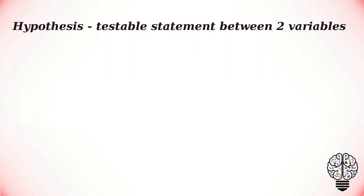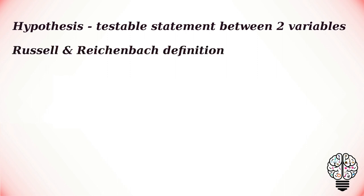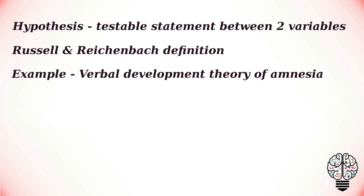A hypothesis exhibits either a general or specific relationship between variables which are measurable or potentially measurable. According to Risal and Raisinbatch, the hypothesis should be stated in a logical form. On the general implications, a hypothesis can be put in the form of a statement: if A is true, then we should follow. For example, the verbal development theory of amnesia states that childhood amnesia is caused by the development of language.